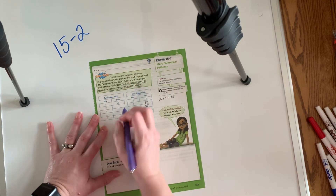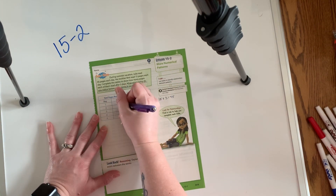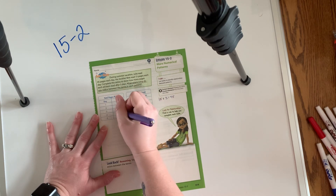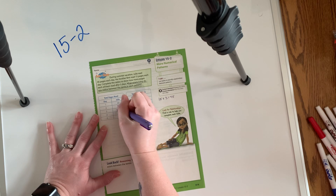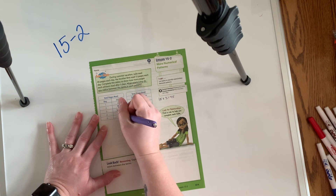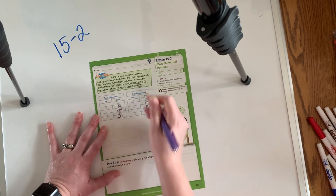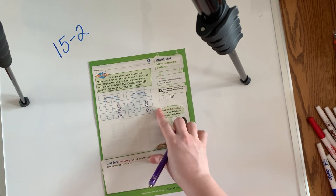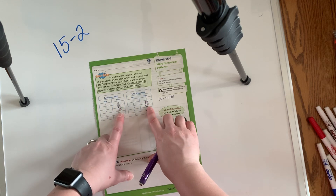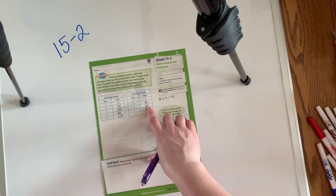Then Julie is going to read 45 pages a day, so she goes to 90. Then 90 plus 45 is 135. 135 plus 45 is 180. And 180 plus 45 is 225.